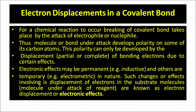Electron displacement in covalent bonds: for a chemical reaction to occur, breaking of a covalent bond takes place by the attack of an electrophile or nucleophile. Thus, the molecule or bond develops a polarity on some of the carbon atoms. This polarity can be developed by the displacement of bonding electrons due to certain effects. Electronic effects may be permanent like the inductive effect, or temporary like the electromeric effect. Such changes involving displacement of electrons in the substrate molecule under the attack of a reagent are known as electron displacement or electronic effects.